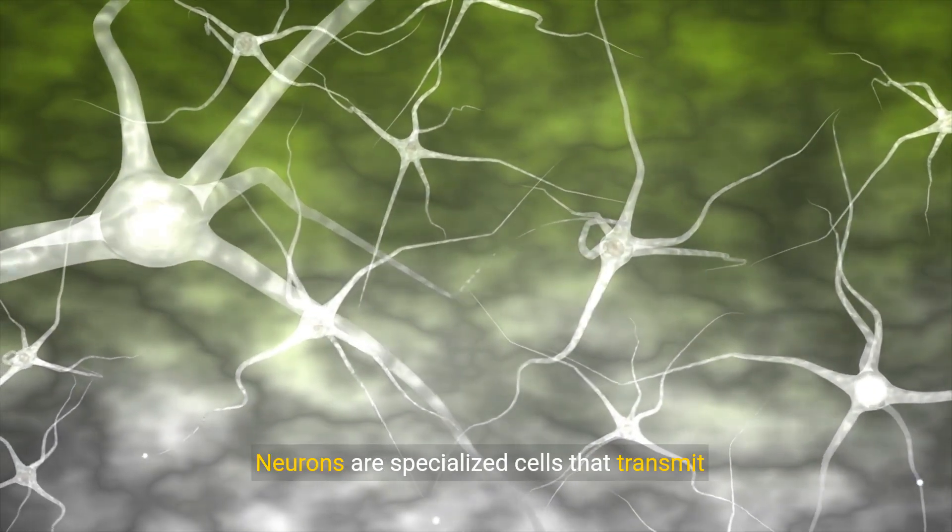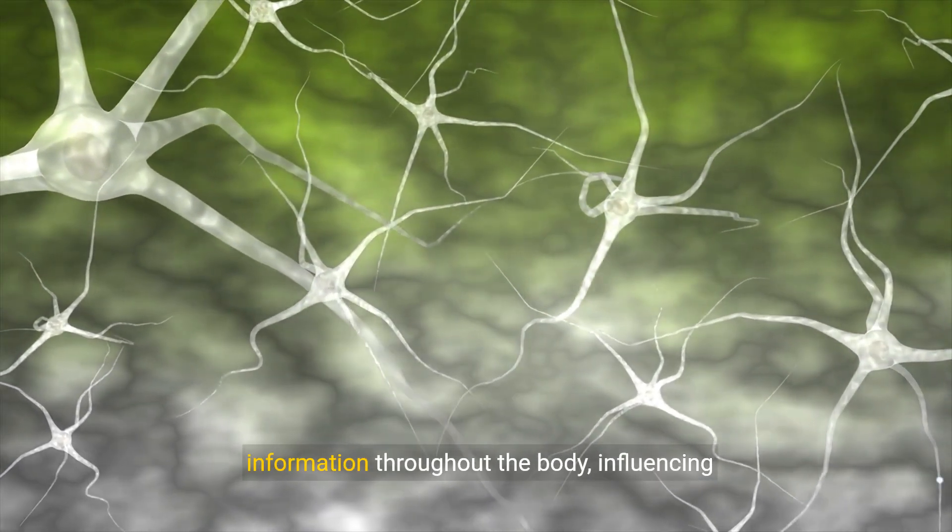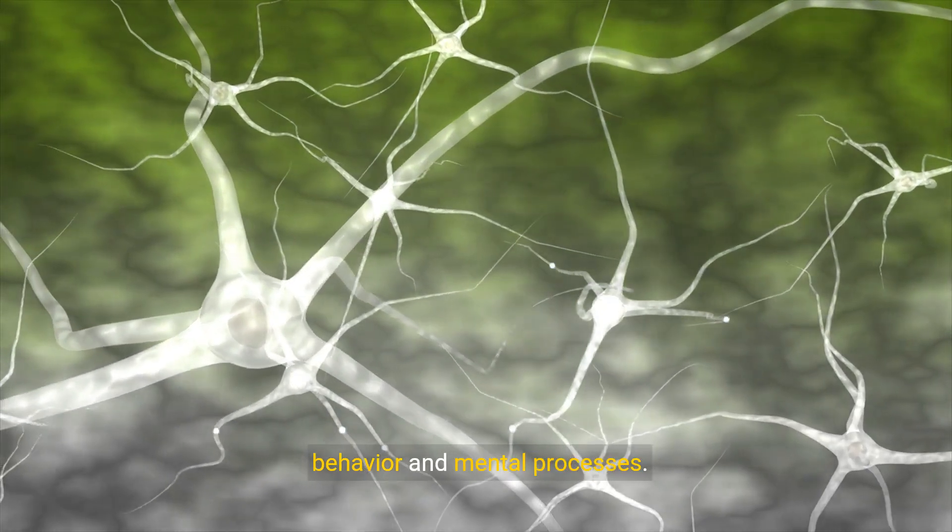Neurons. Neurons are specialized cells that transmit information throughout the body, influencing behavior and mental processes.